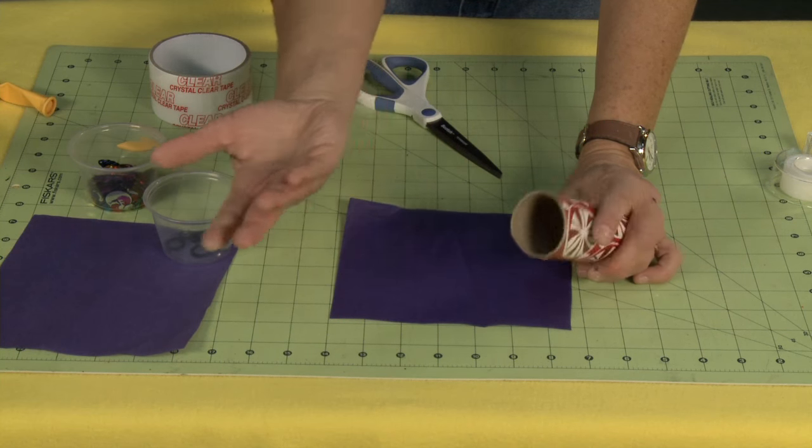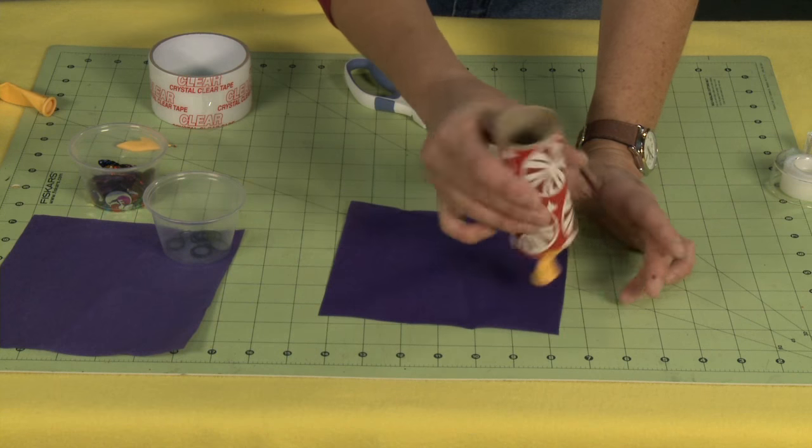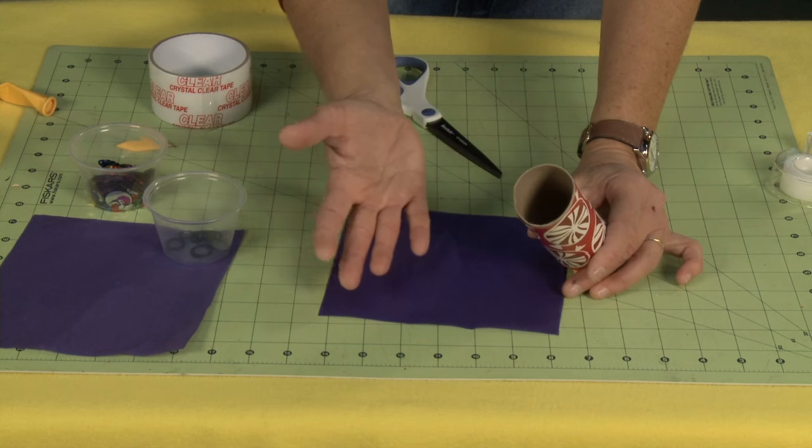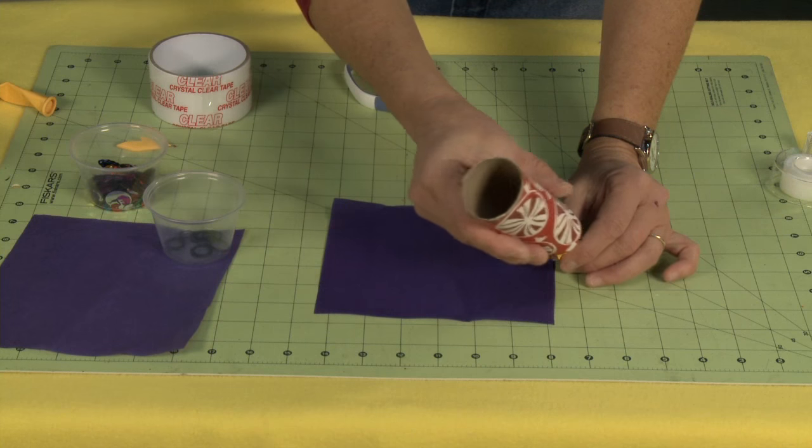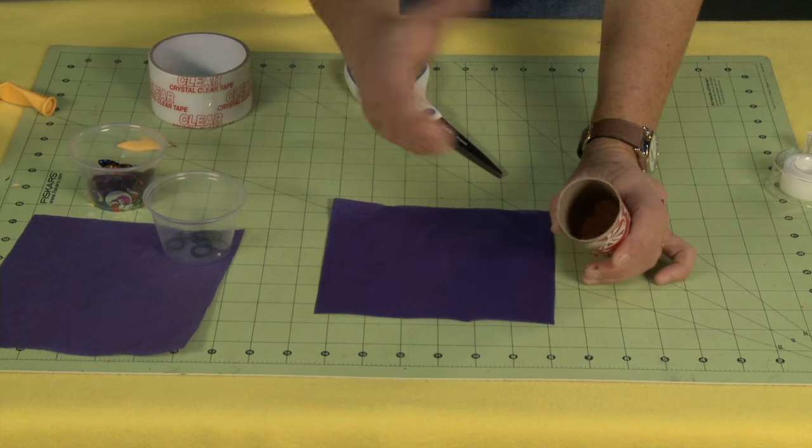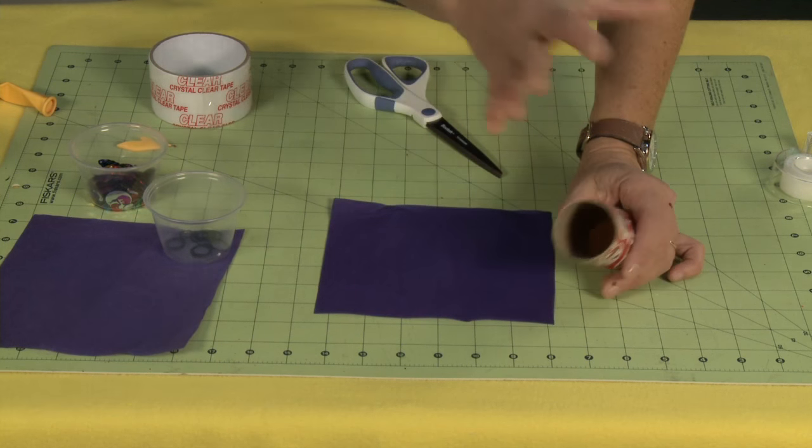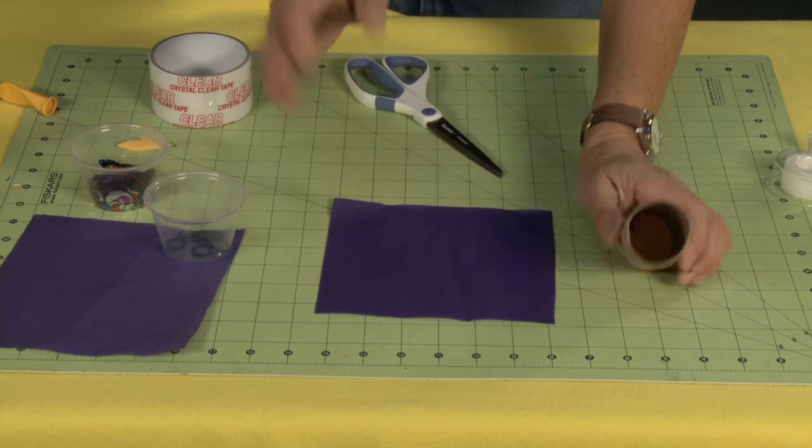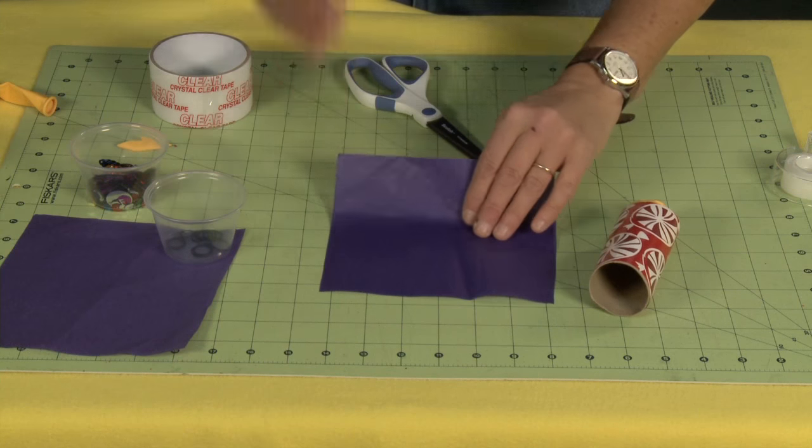But here's the thing. You don't have to. You can just leave it open, put in your confetti, and just use it as a cannon that way. That's completely fine. But if you want to have them set in a big basket or bowl, kind of like party poppers, this is what you're going to want to do.